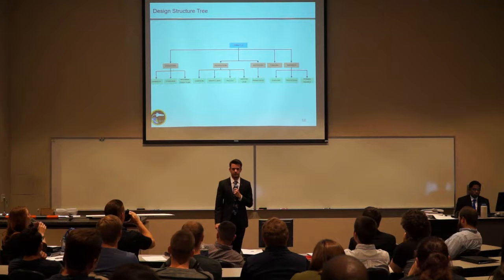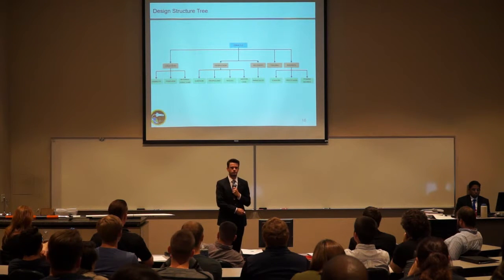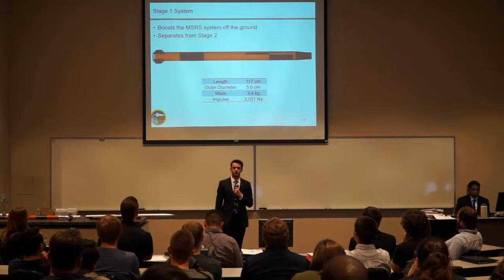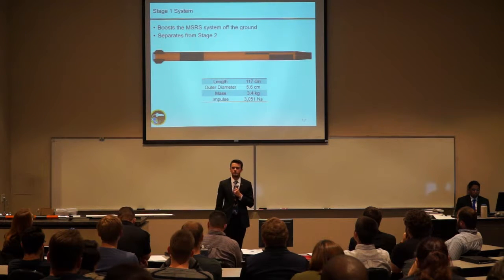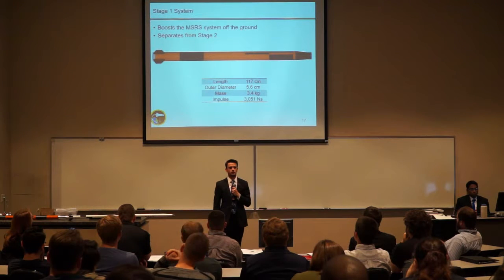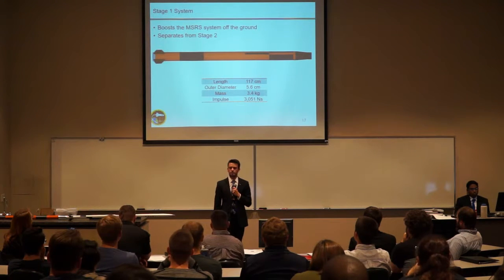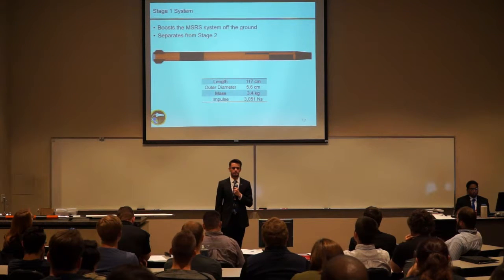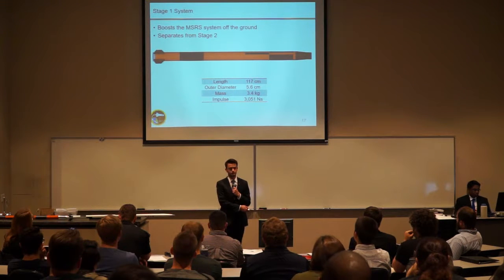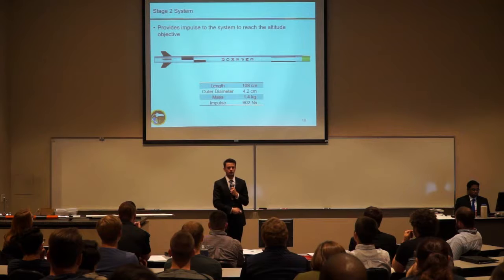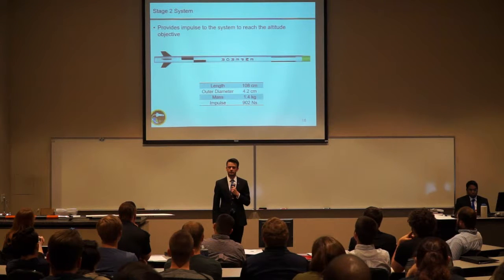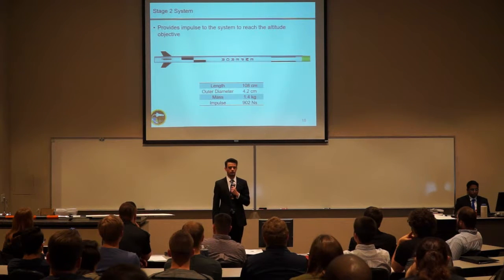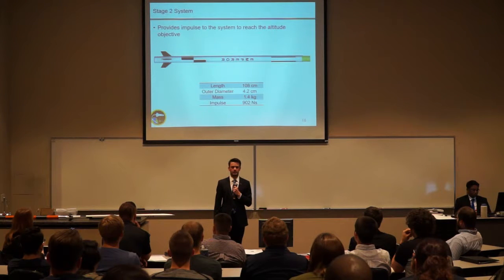Today we'll be mainly going through the subsystem validations. Stage 1's purpose is to boost the MSRS off the ground and separate from the second stage. The total length of Stage 1 is 117 centimeters, with an outer diameter of 5.6 centimeters, a mass of approximately 3.4 kilograms, and the motor has 3,051 Newton-seconds of impulse. Stage 2's purpose is to provide impulse to reach the altitude objective, with a total length of 108 centimeters, outer diameter of 4.2 centimeters, mass of about 1.4 kilograms, and a motor impulse of 902 Newton-seconds.